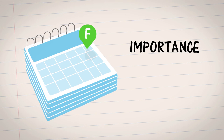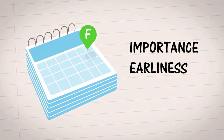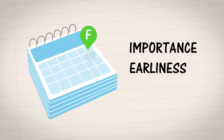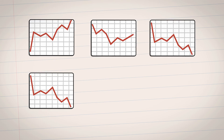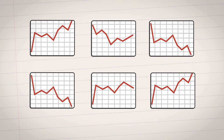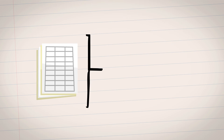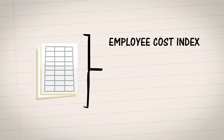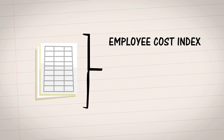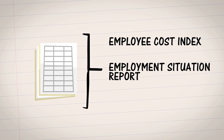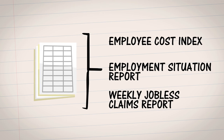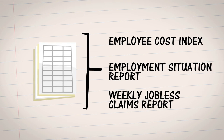The combination of importance and earliness makes for hefty market impacts. Other indicators include the Employee Cost Index, or ECI, Employment Situation Report, and Weekly Jobless Claims Report.